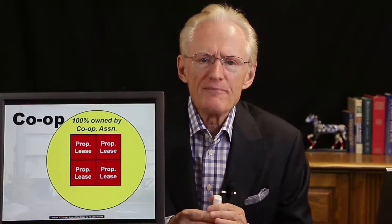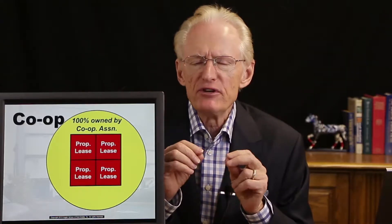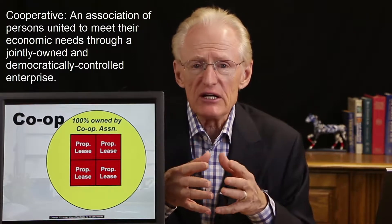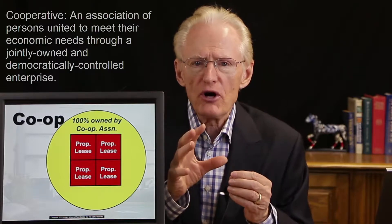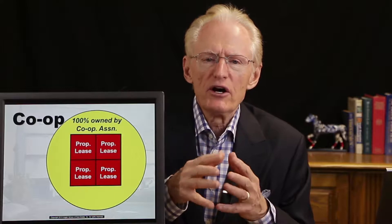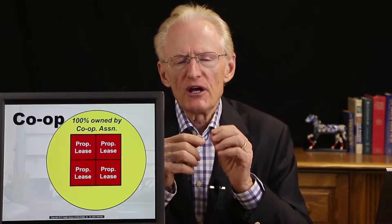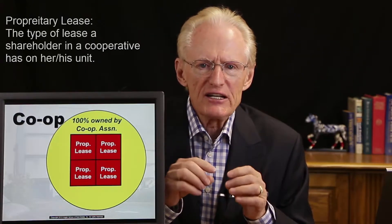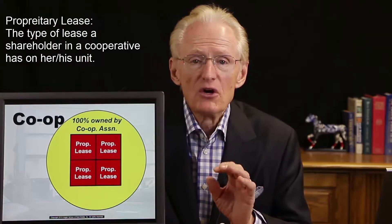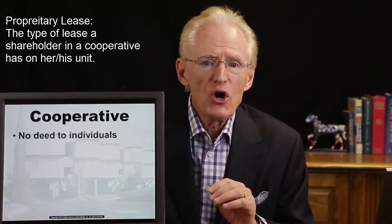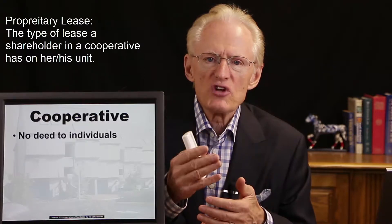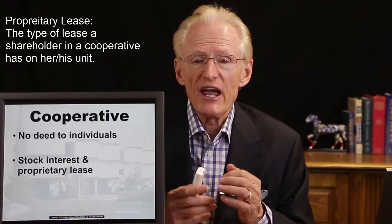Now let's talk about co-ops using the same four-unit property. With a co-op, you get no individual ownership of your living unit. An association is formed — most commonly a corporation — and you get stock in that corporation which owns the whole property. As part of your ownership interest in that cooperative association, you get the right to lease one of the units, known as a proprietary lease, because you're one of the owners of the co-op. In a co-op, you do not get a separate deed for your unit — the association gets a deed to the property as a whole, and you have stock in that association.